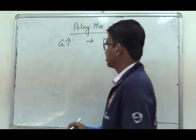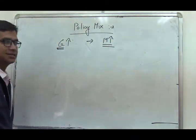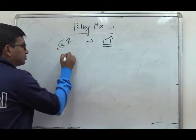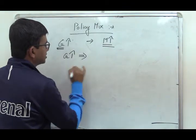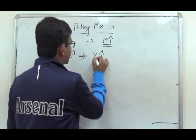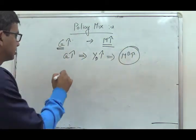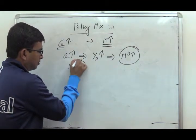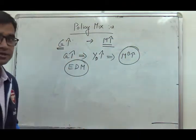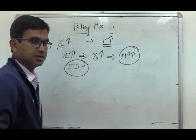On one hand the government is increasing the public expenditure, and on the other hand the government is increasing the money supply. Initially, whenever the government increases the money supply, the aggregate demand and the output will increase. If aggregate demand increases, the demand for money will also increase, so there will be an excess demand situation in the money market. But whenever the government is increasing the money supply, this will dampen the excess demand in the money market, and consequently the rate of interest will definitely rise.